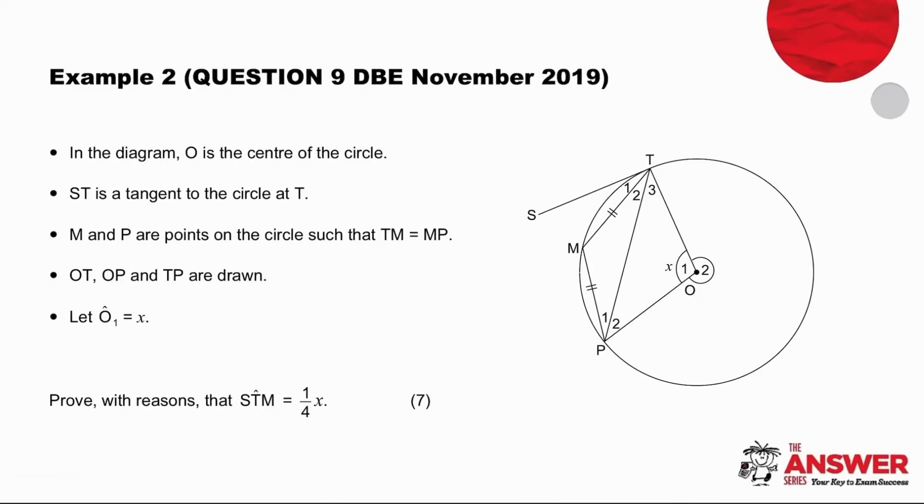All right, moving to example two, we have a real challenge on our hands. And the key warning to that is the fact that we have a seven mark question and no scaffolding. They haven't done anything to give us an idea of where to start. So we need to be very calm, very relaxed, and use our strategies that we've been developing over time.